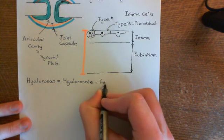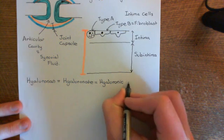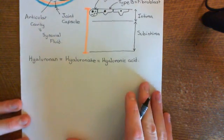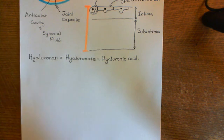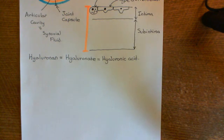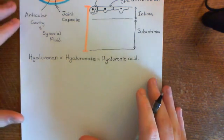Hyaluronan, also known as hyaluronate or hyaluronic acid — it has a lot of names. This is a great big polysaccharide. I want to show you which monosaccharides this polysaccharide is made up of. It's actually a polymer of disaccharides, so you repeat a disaccharide over and over again. Let's discuss the components of this disaccharide, and then I'll draw it all out and show you how we polymerise it together.